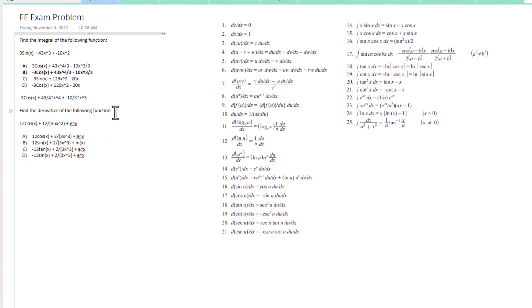Let's go to this derivative problem. Find the derivative of the following function: 12cos(x) + 12/(35x²) + e^x. For the first term 12cos(x), the derivative of cosine equals negative sine, so we'll have negative 12sin(x).